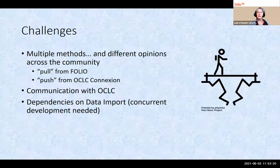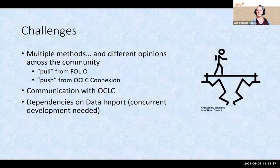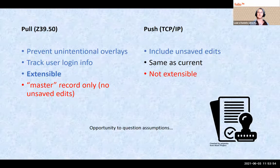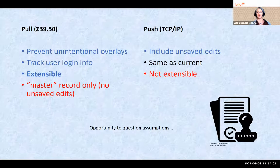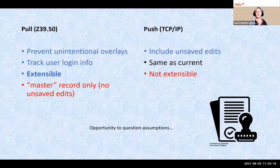There are primarily two methods we can use to import single records: pull and push. The pull method starts in Folio's inventory and makes a call out to retrieve a record — we can pull records from OCLC WorldCat, from Library of Congress, and from various other national or union library catalogs. The push method starts in OCLC Connection and sends the record into Folio via TCP/IP.